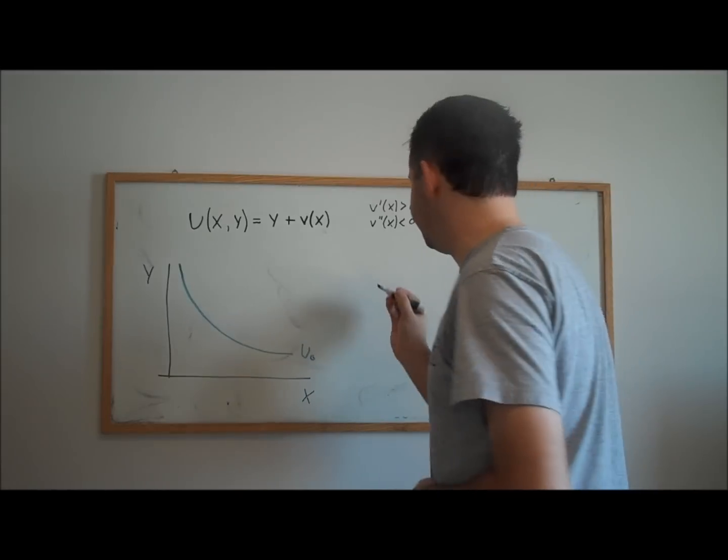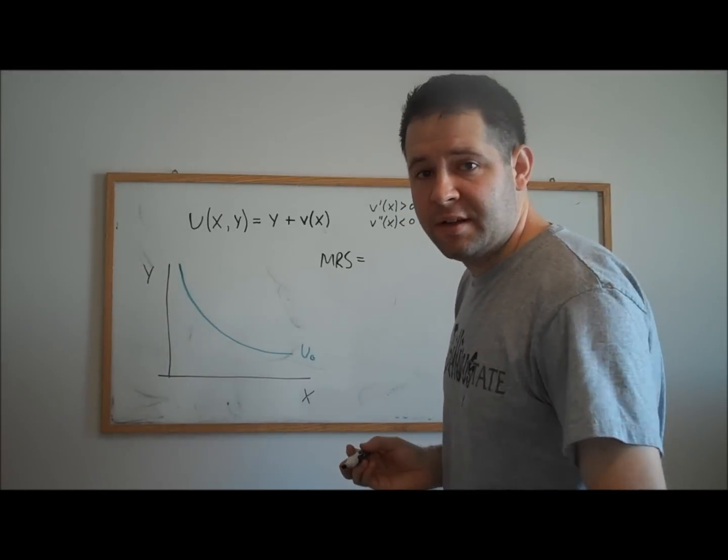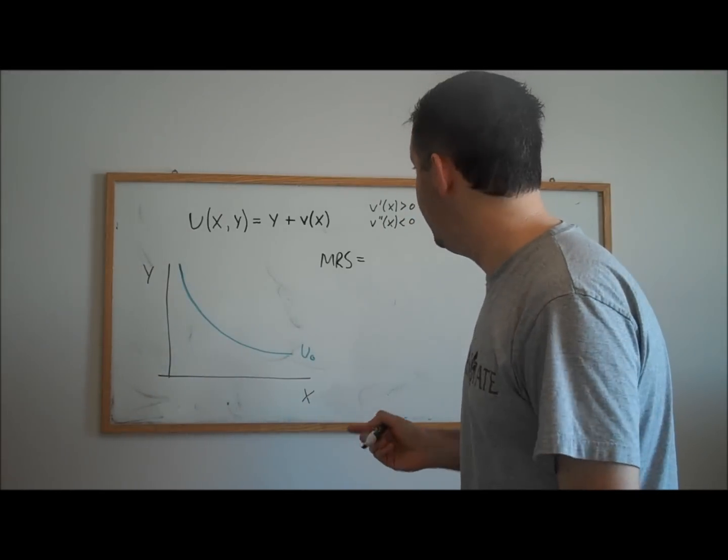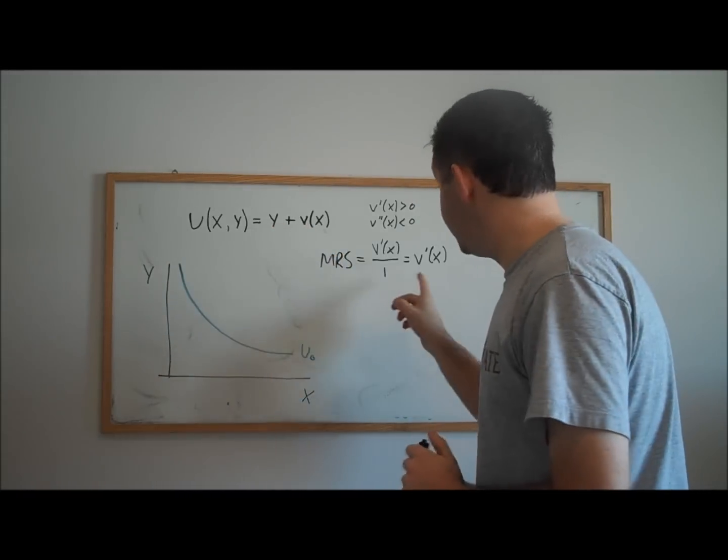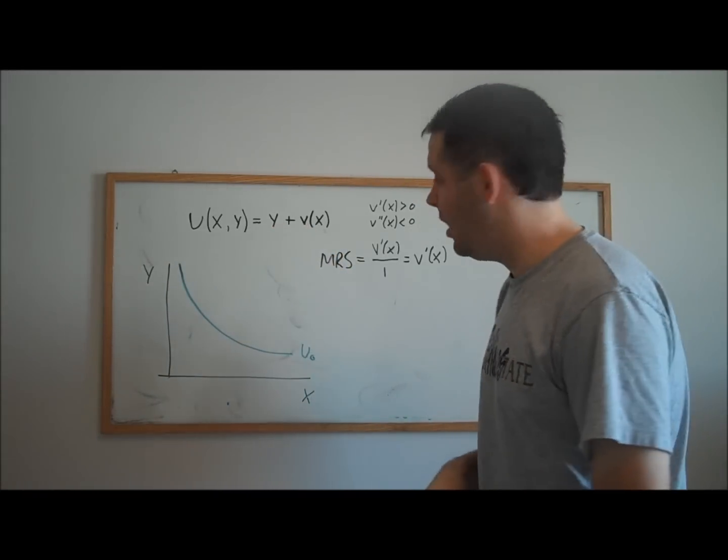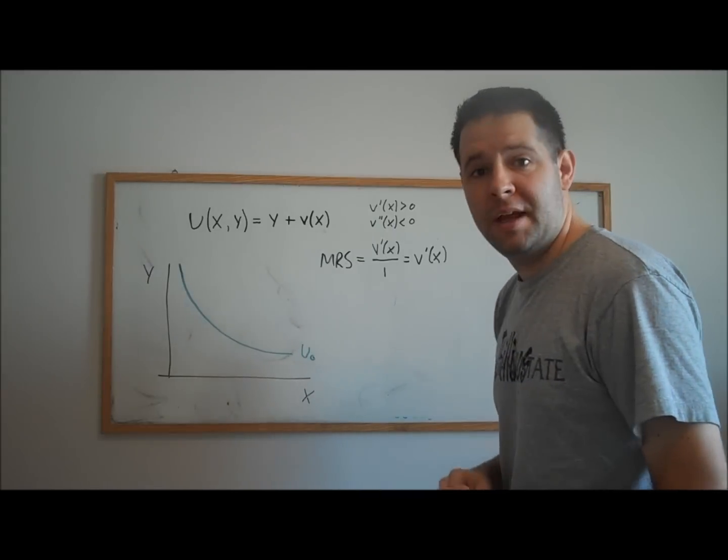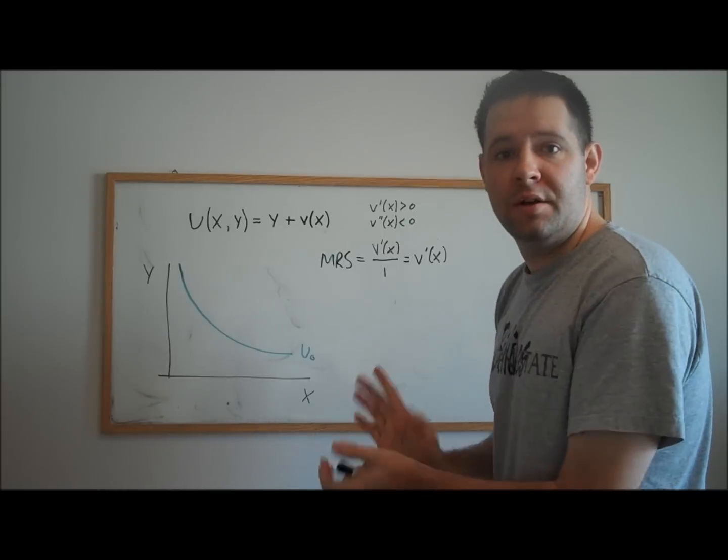So what's the marginal rate of substitution? Remember, that's marginal utility of x divided by marginal utility of y. V prime of x divided by 1. The marginal rate of substitution doesn't depend on y. All it depends on is where are you in terms of x.